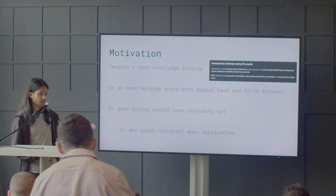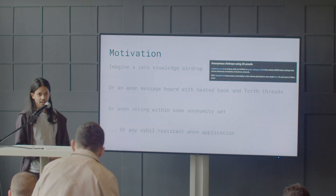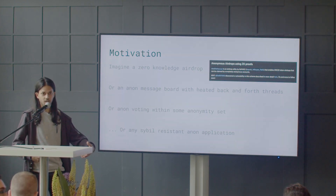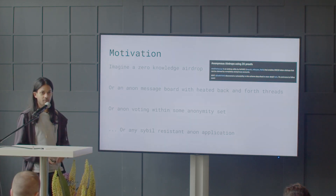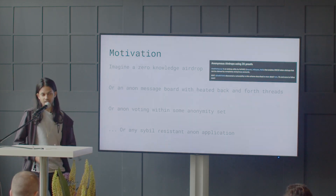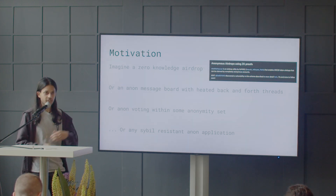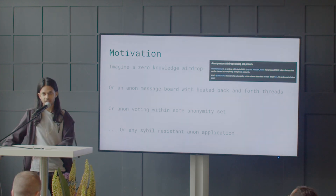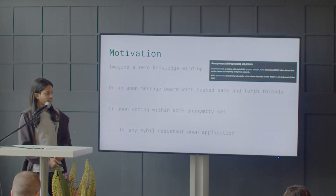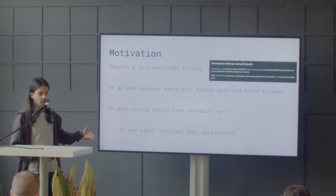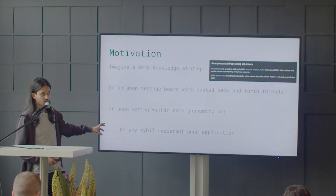Or consider anonymous voting. If you have an anonymity set that you want to allow to vote under a protocol, but you want to make sure that no one's double voted, you need some signal that says: I voted in the past, so don't let me vote again in the future. Or any anonymous application where you want civil resistance or uniqueness.